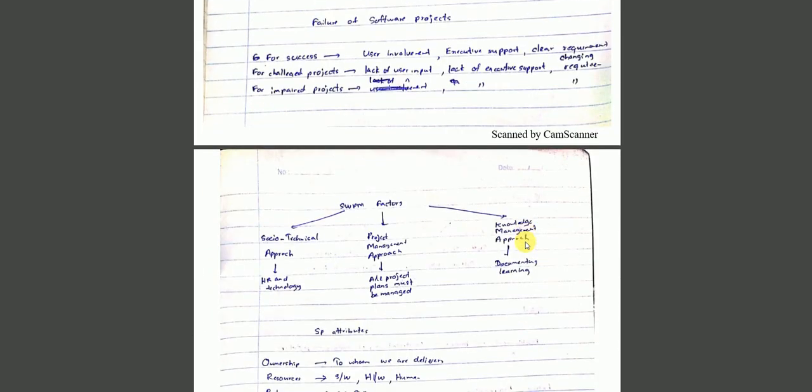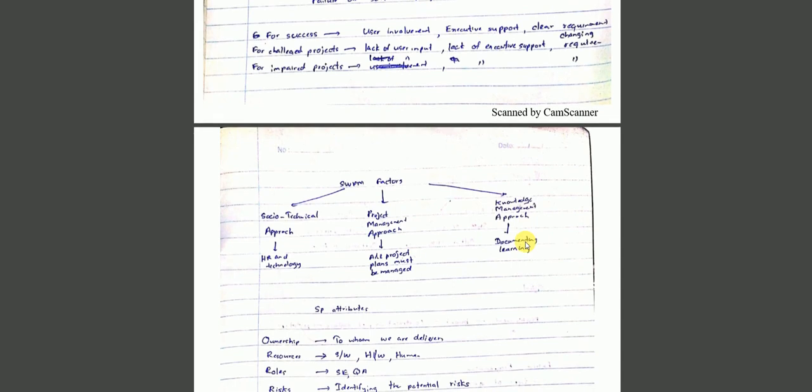Project management approaches: there's the social-technical project management approach and knowledge management approach. The social-technical approach focuses on both technical aspects and project management tools, while also considering HR and people in the technical side.